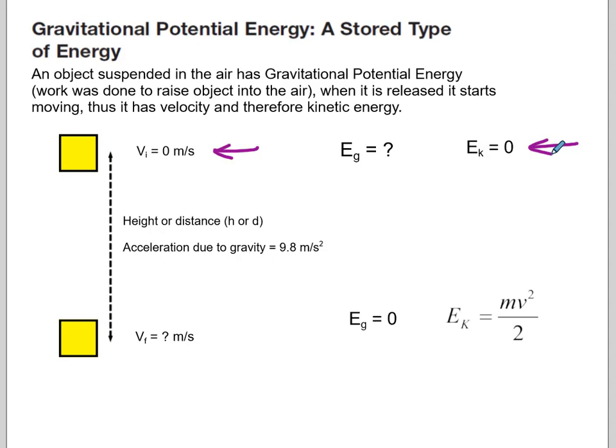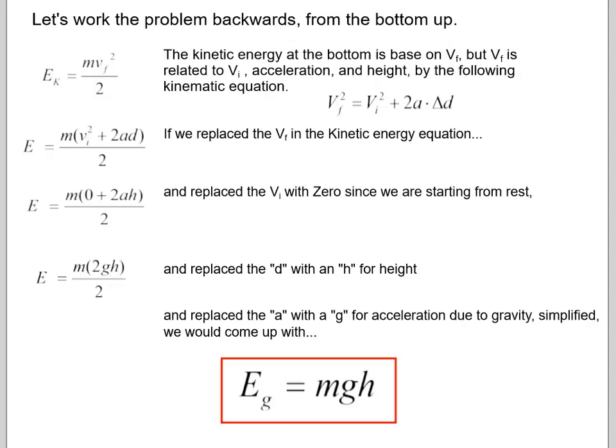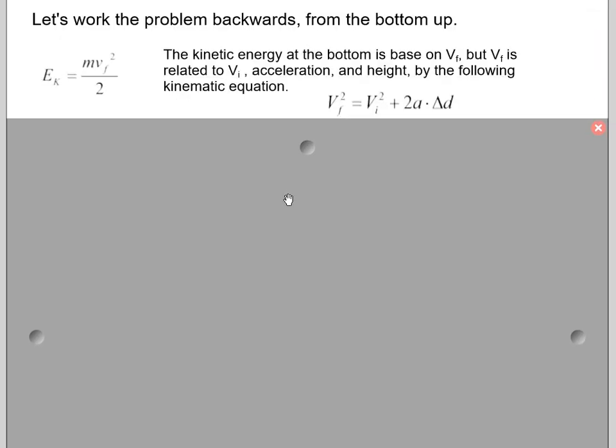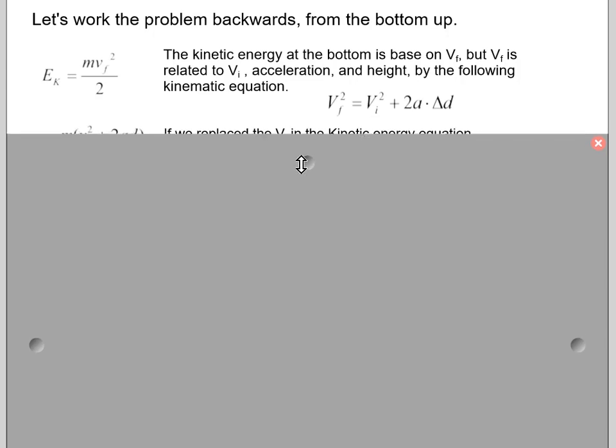So when it gets down to the ground or our reference line, that's the bottom of the problem, we would expect the gravitational potential energy to be zero. And we already know that the kinetic energy will be based upon this unknown velocity. So let's start the proof. So we're going to work the problem backwards. So we have our kinetic energy, which is based on the final velocity, right before the end of the problem. So if we take that VF, that final velocity, and I look at my kinematic equations, and I replace the VF squared with this entire expression right here. I'm going to take VF and replace it with VI squared plus 2AD.